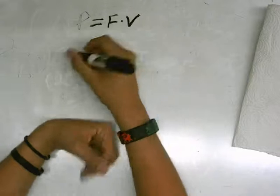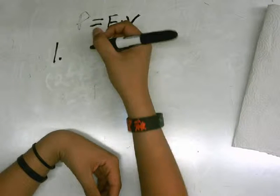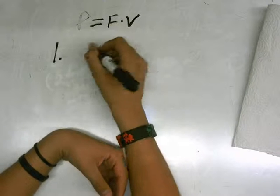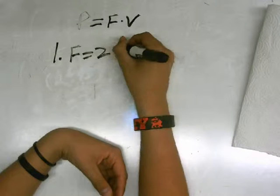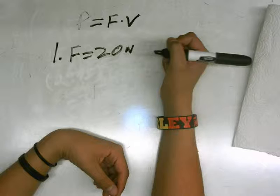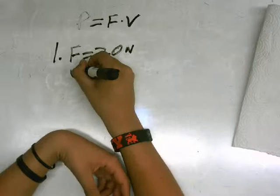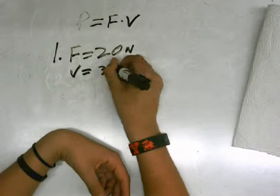So the first problem, it says that force equals 20 newtons, and velocity equals 35 meters per second.